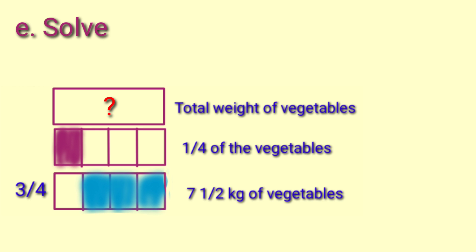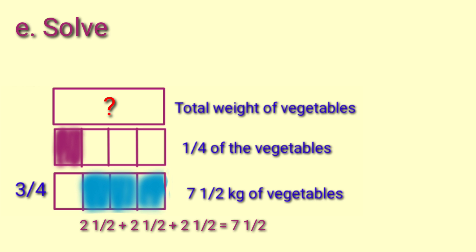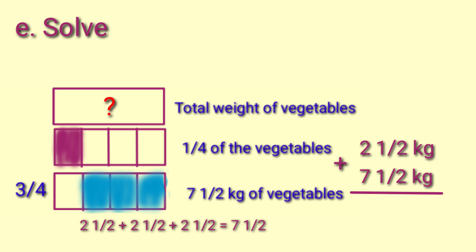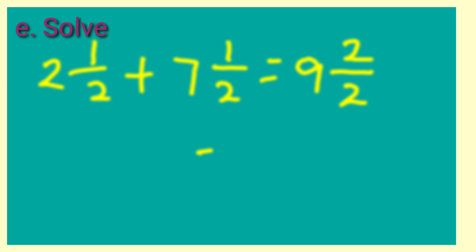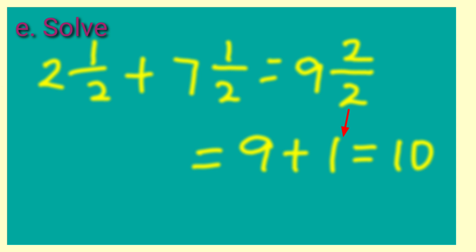Using trial and error or guess and check, we will find three equal numbers that total seven and one half. If we add two and one half plus two and one half plus two and one half, the answer is seven and one half. That means one fourth of the vegetables weighed two and one half kilograms. Now add: two and one half plus seven and one half equals nine and two halves, or nine and 2/2. Simplify: 2 divided by 2 equals 1, a whole number. Add it to 9, and the answer is 10.